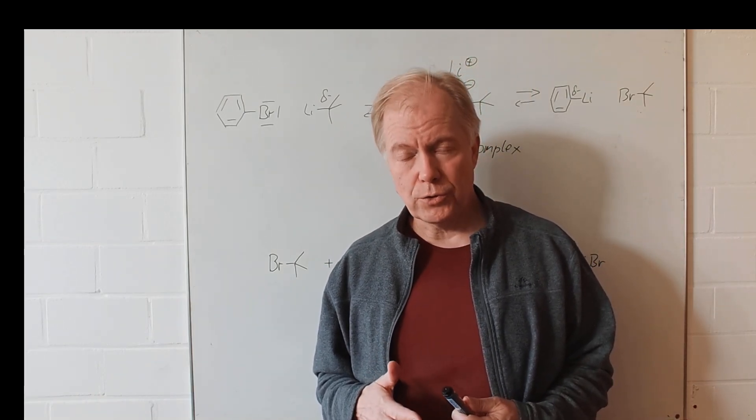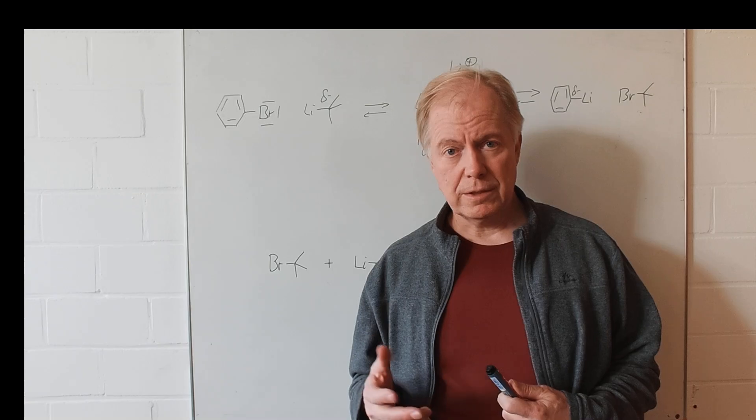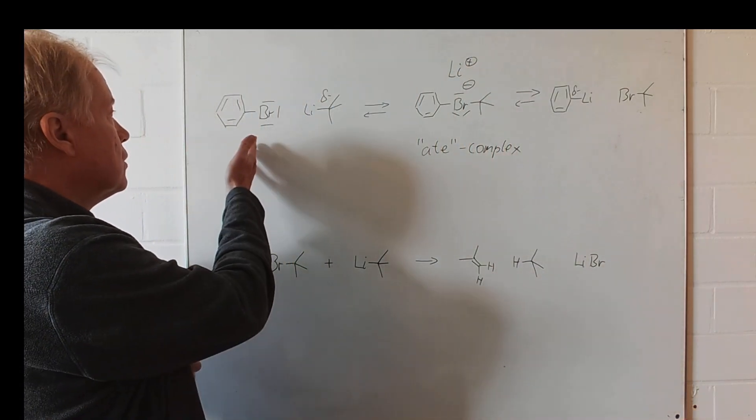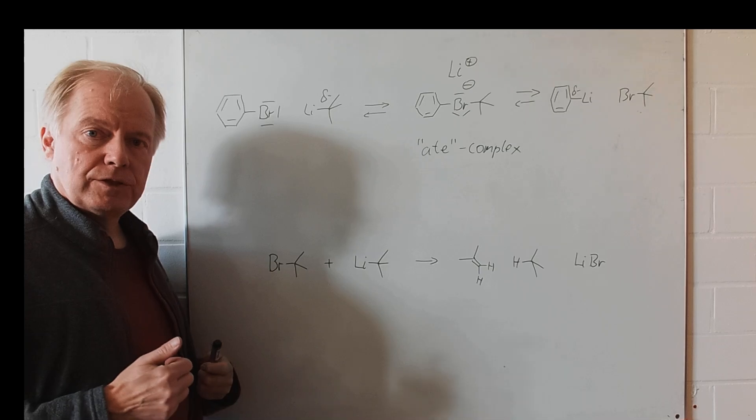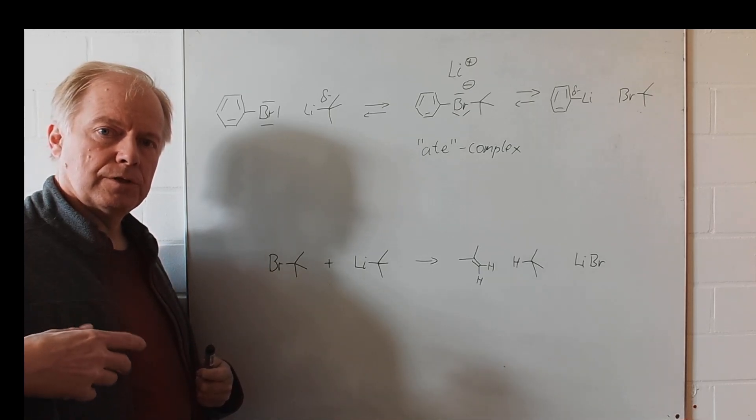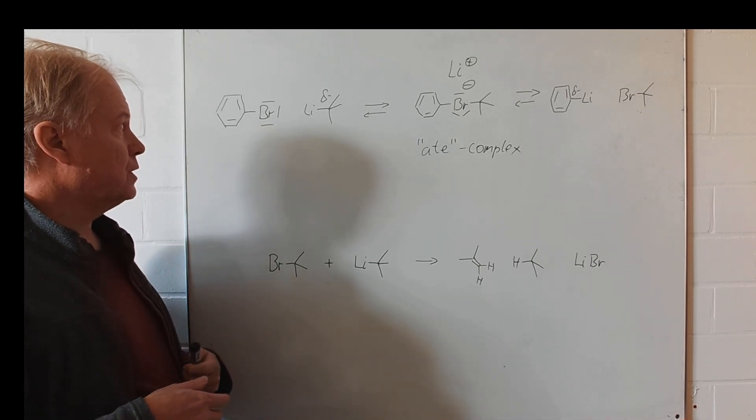In today's tutorial we will have a look at the methylation of bromobenzene. Bromobenzene can be methylated for instance with magnesium, forming a Grignard reagent, in this case a phenyl Grignard.